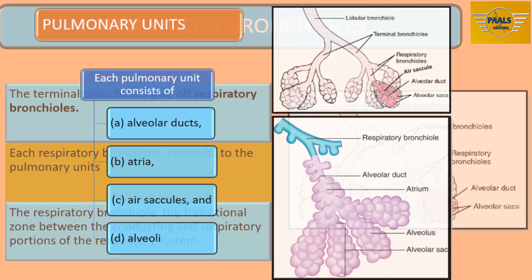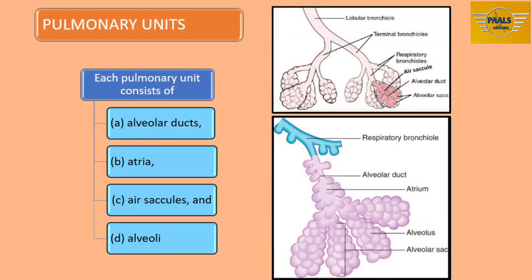Each pulmonary unit is made of one alveolar duct, atria, air sacs, and alveoli. The alveoli are specialized sac-like structures which form the greater parts of the lungs.